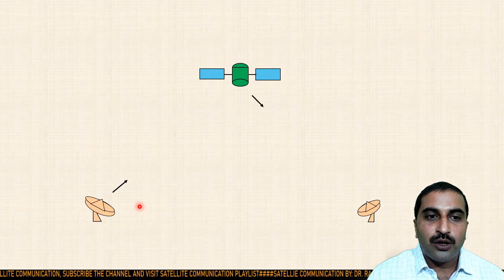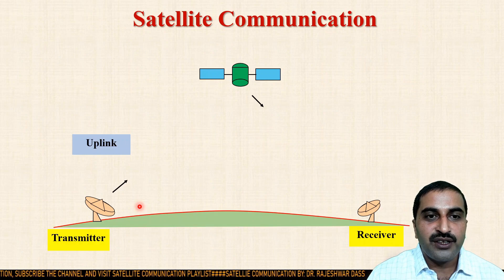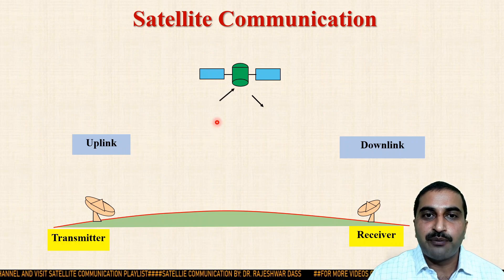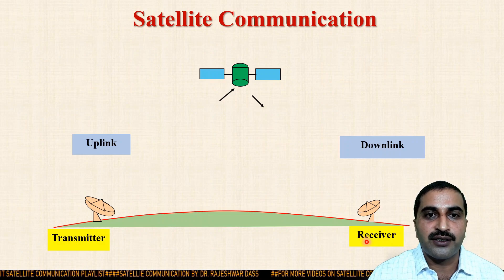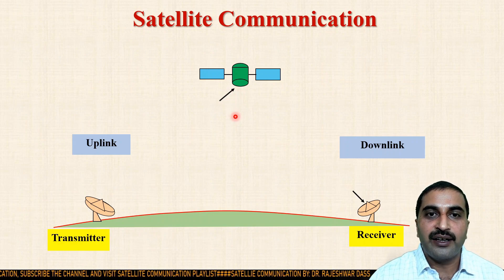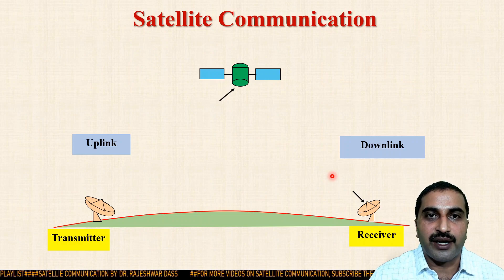We are aware of how satellite communication takes place. The transmitting Earth station transmits the signal using the uplink frequency towards the satellite. The satellite receives that signal and transmits it back using the downlink frequencies towards the receiving Earth station. On the basis of how the satellite receives and retransmits the signal, satellites may be categorized into different types.